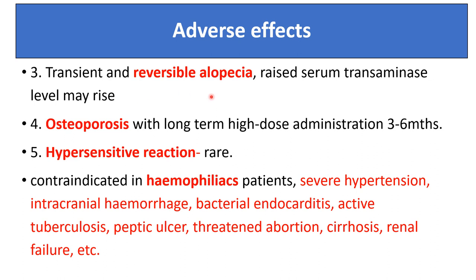Other adverse effects include transient and reversible alopecia, and serum transaminase levels may rise. Osteoporosis can occur with long-term use of higher doses of heparin. Hypersensitivity reactions are rare. Heparin is contraindicated in hemophilic patients, severe hypertension, intracranial hemorrhage, bacterial endocarditis, active tuberculosis, peptic ulcer, threatened abortion, cirrhosis, and renal failure — all conditions where the chances of bleeding are increased.